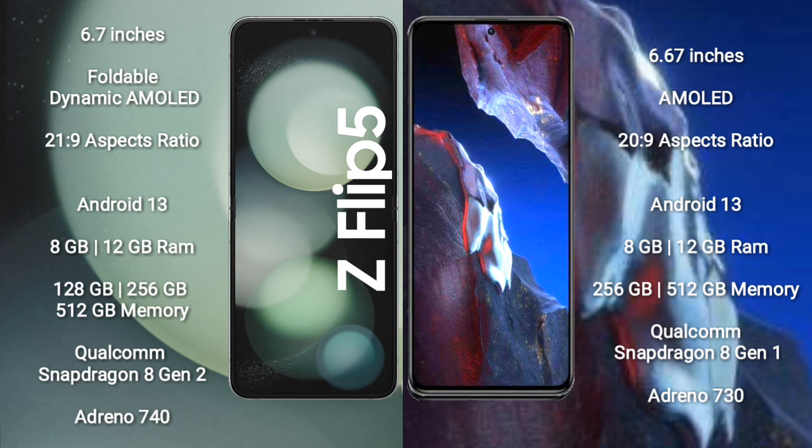Xiaomi Poco A5 Pro comes with 8GB and 12GB RAM options, with 256GB and 512GB internal storage, powered by a Qualcomm Snapdragon 8 Gen 1 processor and Adreno 730 GPU.